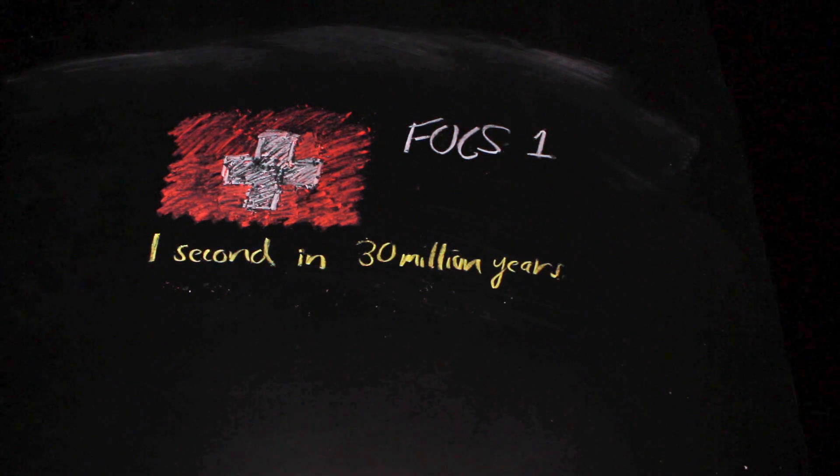In terms of measurement, this is an incredibly accurate measurement. In fact, the FOCS-1 atomic clock in Switzerland has an uncertainty of one second in 30 million years.